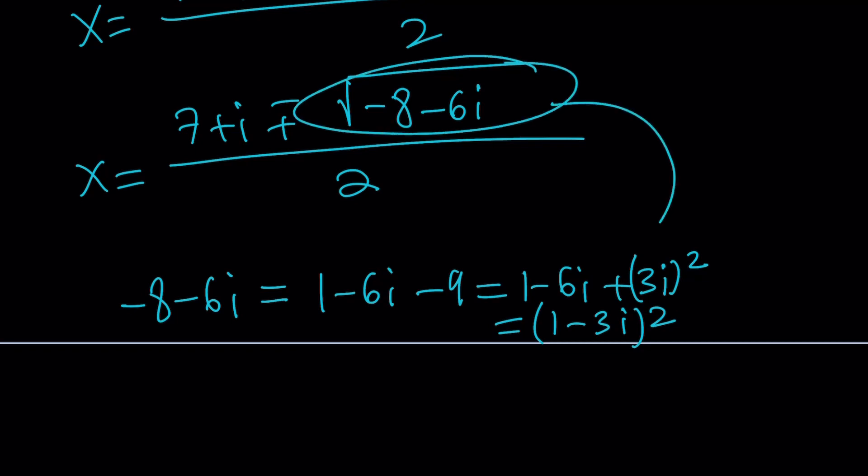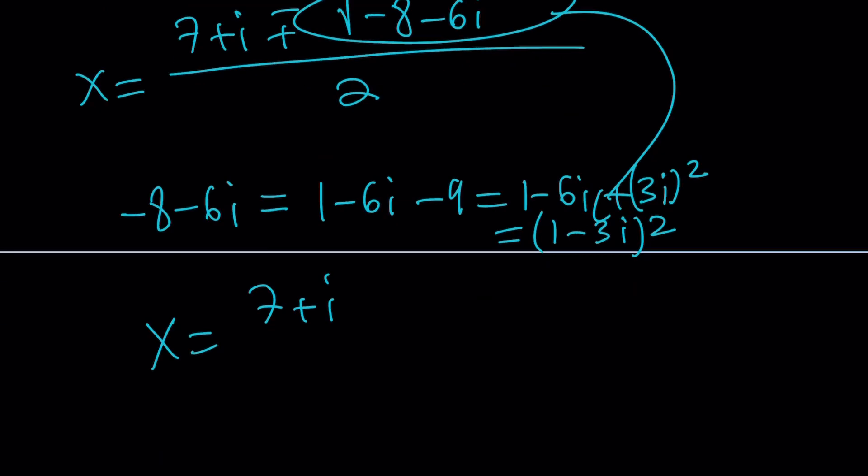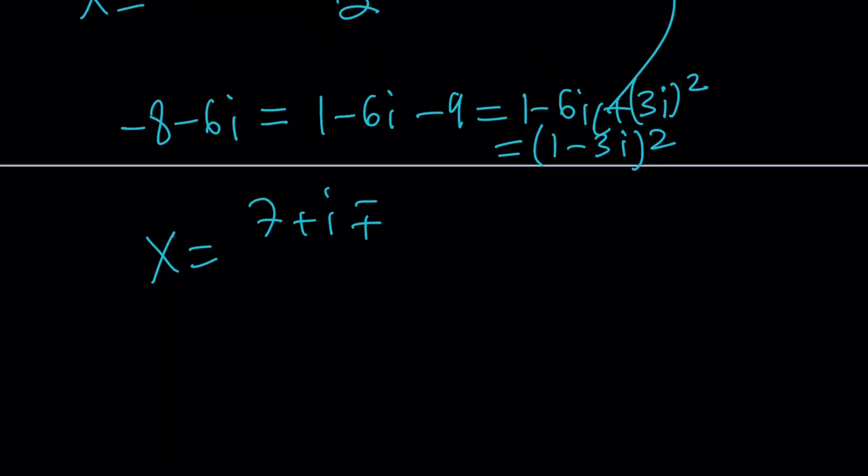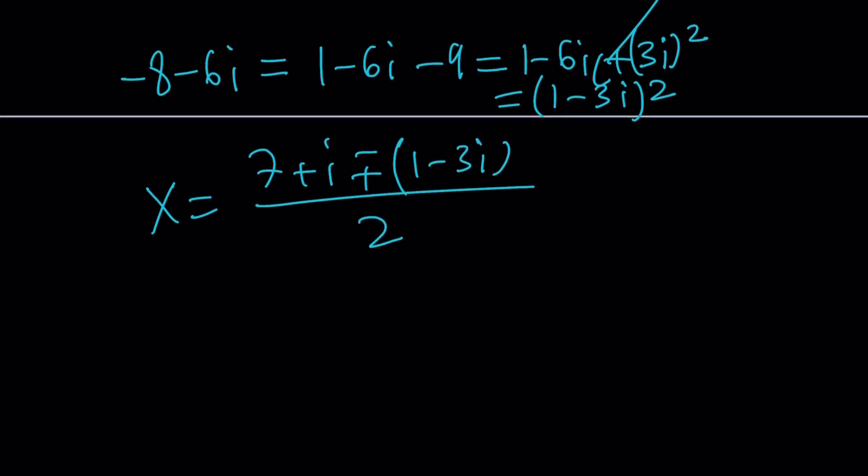This number is equivalent to that. So now, X is going to become 7 plus I plus minus the square root of this expression is going to be 1 minus 3I divided by 2. And now, we're going to go ahead and split up. And that's going to give us the values. Z and W are the roots.